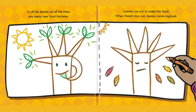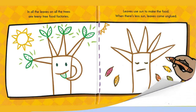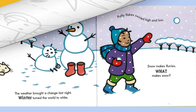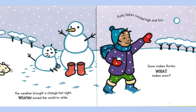All the leaves on all the trees are teeny tree food factories. Leaves use sun to make the food. When there's less sun, leaves come unglued. The weather brought a change last night — winter turned the world to white.